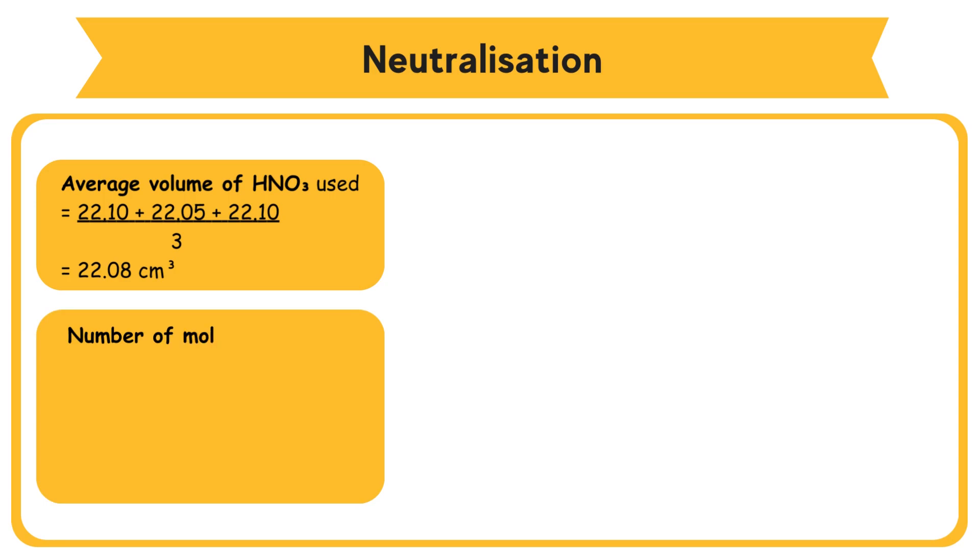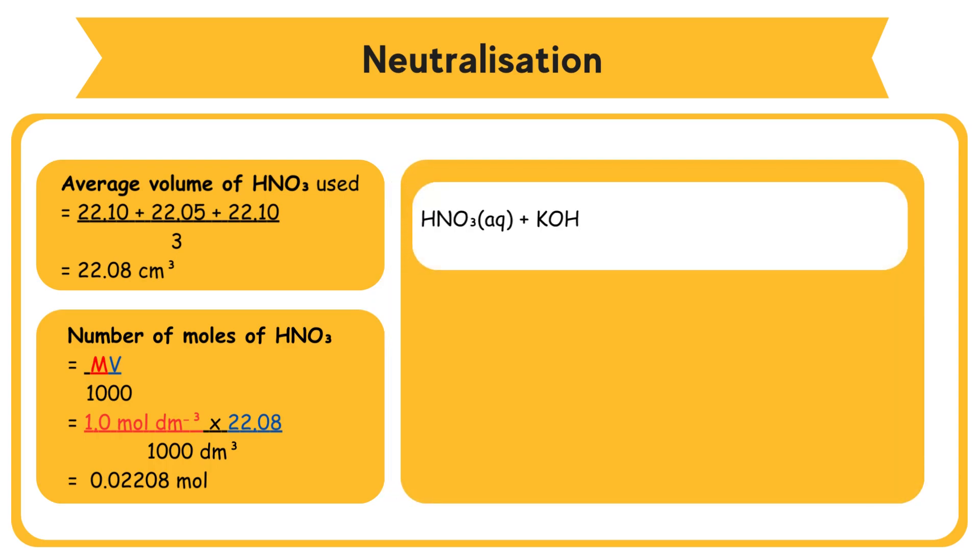Number of moles of HNO3 = MV/1000 = 1.0 mol/dm³ × 22.08 / 1000 dm³ = 0.02208 mol. HNO3(aq) + KOH(aq) → KNO3(aq) + H2O(l). From the equation, 1 mole of HNO3 reacts with 1 mole of KOH. Hence, 0.02208 moles of HNO3 will react with 0.02208 moles of KOH.